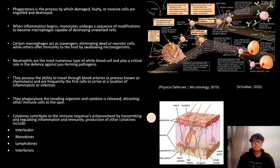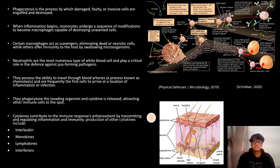Neutrophils are the most numerous type of white blood cell and play a critical role in defense against pus-forming pathogens. They possess the ability to travel through the blood vessels and are frequently the first cells to arrive at the location of inflammation or infection. Cytokines are tiny proteins produced by a variety of different cells that contribute to the immune response by transmitting and regulating inflammation and immunity. The concentration of cytokines results in the production of other cytokines, occasionally resulting in a chain reaction.